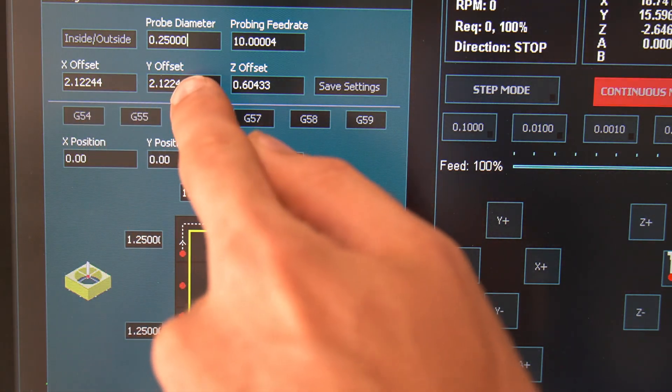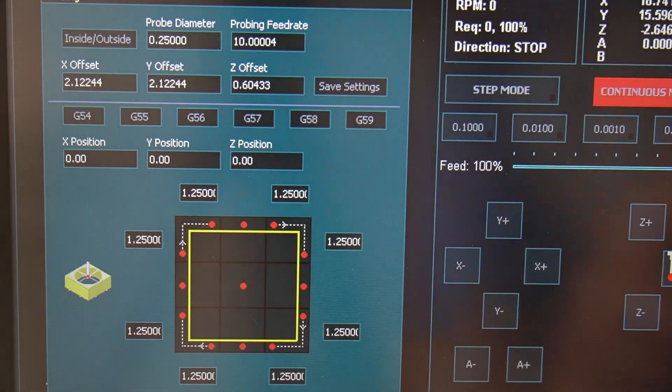Once this is open, we'll see our offsets for X, Y, and Z that will need to be adjusted according to our probe.